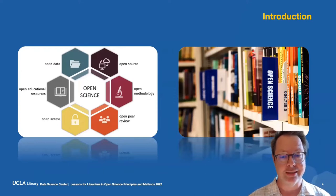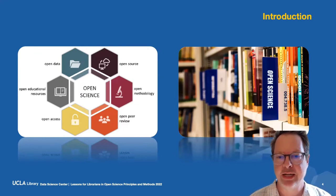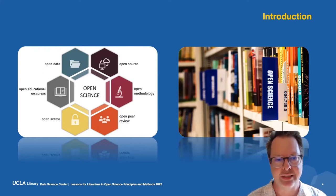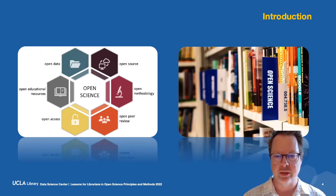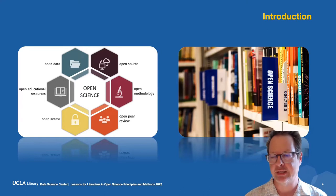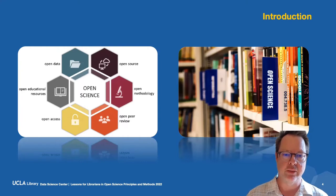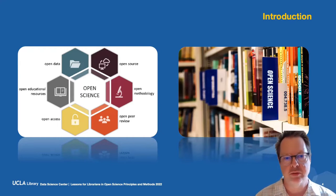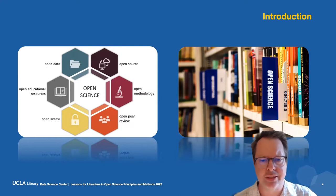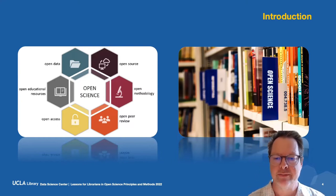So what is open science? The United Nations Educational, Scientific, and Cultural Organization — UNESCO — defines open science as a movement and a set of practices aiming to make scientific knowledge openly available, accessible, and reusable for everyone, to increase scientific collaborations and sharing of information for the benefit of society and science. It comprises all scientific disciplines, including basic and applied sciences, natural and social sciences, and the humanities. It builds on key areas which include open science knowledge, open science infrastructures, science communication, open engagement, and open dialogue.